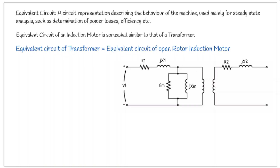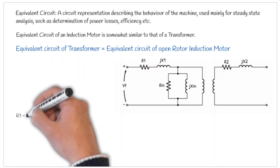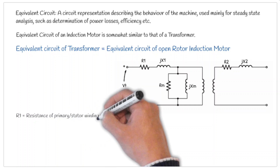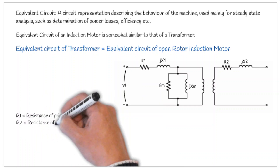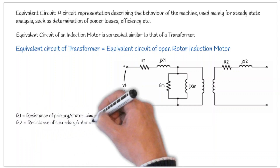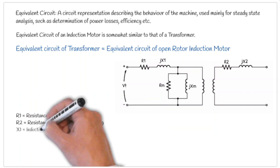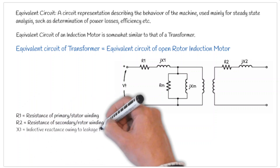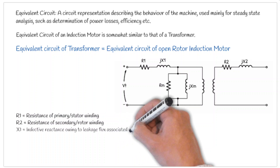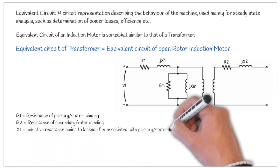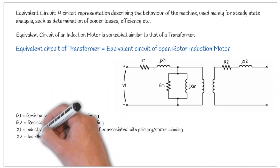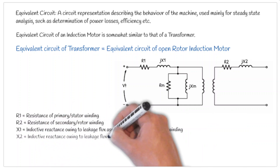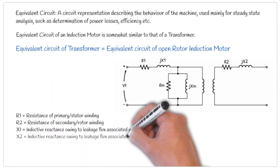Here VAT is the applied voltage. R1 is the resistance of the primary winding, or we can say of the stator winding of the induction motor. R2 is the resistance of the secondary winding or of the rotor windings. X1 is the inductive reactance owing to the leakage flux associated with the primary winding or the stator winding. X2 is the inductive reactance owing to the leakage flux associated with the rotor winding.